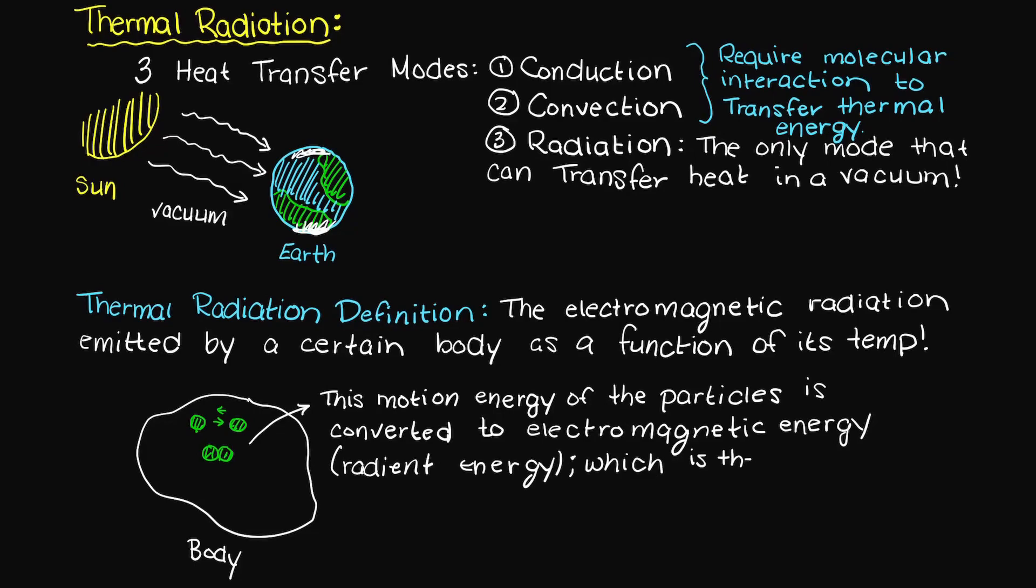So the kinetic energy, the energy of the movement in the particles, is essentially converted to what we call radiant energy, which is the energy generated by thermal motion. So this definition is likely still pretty confusing to you, so let's break it down even more.